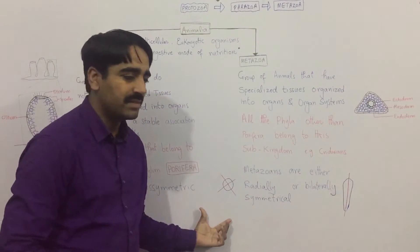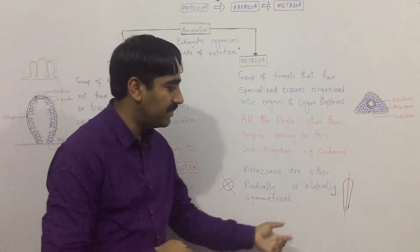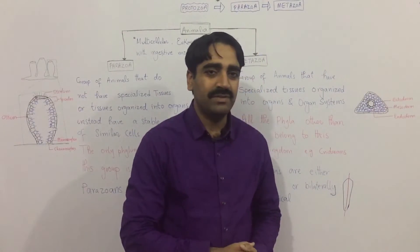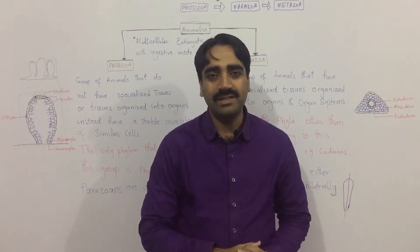Radial symmetry means they have more than one plane of division, and bilateral symmetry means they have only a single plane of division that divides the body into two equal, identical halves.